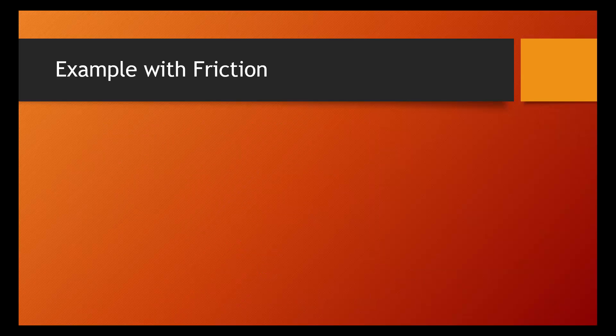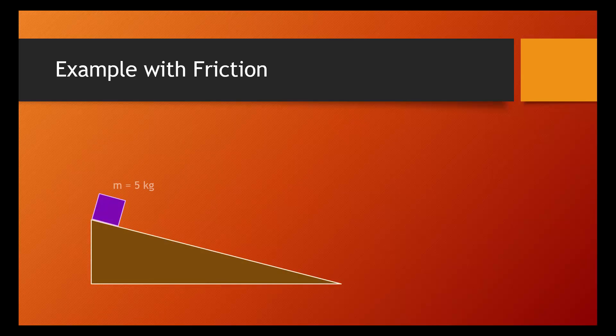Now let's take a look at a conservation of energy example with friction. Here we have a 5 kilogram mass at rest on a 3 meter tall incline. When we release it, it slides down to the bottom, reaching a final velocity of 6.2 meters per second. The question we want to answer is how much work is done against friction. When you see that phrase, you want to be thinking internal energy. This is our way of asking for how much internal energy is produced during this process.